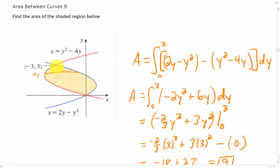What we learned in this problem is that if we have a region with a clear right and left function instead of clear upper and lower functions, we can integrate with respect to y using the rightmost function minus the leftmost function as the integrand.